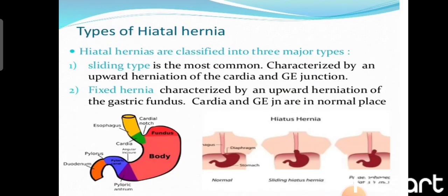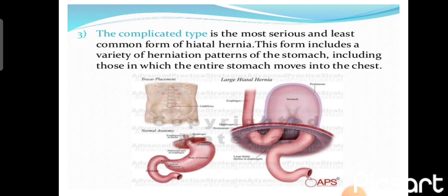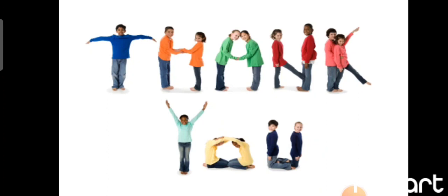There are different types of hiatal hernia. The sliding type is the most common, characterized by upward herniation of the cardiac part and the gastroesophageal junction. In fixed hernia there is herniation of the fundic part of the stomach. In complicated type there is herniation of the entire stomach through the hiatus. This completes the topic of the anatomy of the stomach.